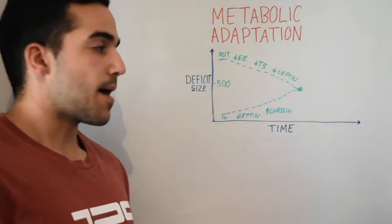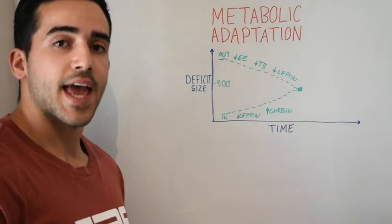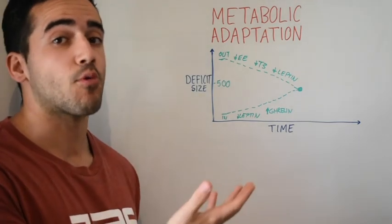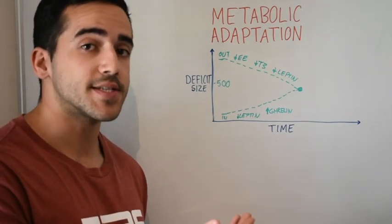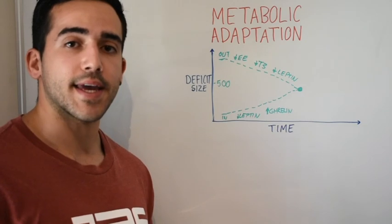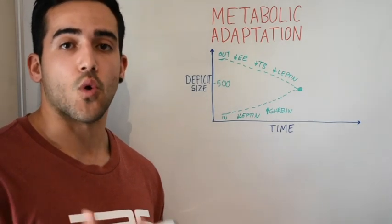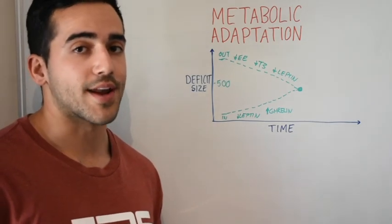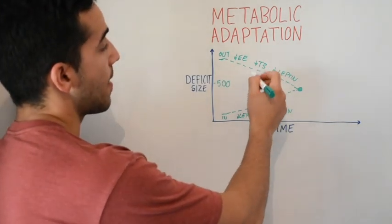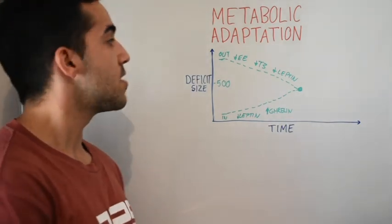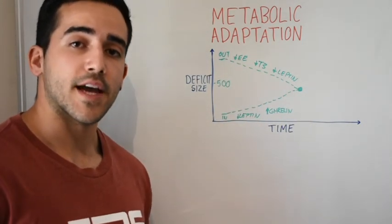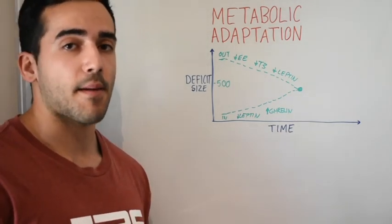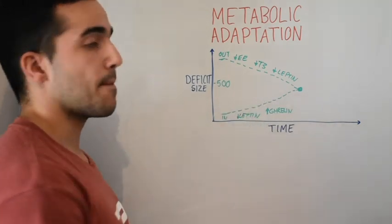So those are some of the main reasons that energy expenditure tends to drop during a dieting phase and our calorie intake is more prone to increasing. There are more hormones that come into play here, like cortisol, which also increases when you are in an energy deficit. Cortisol, when chronically elevated, has a potential to impact T3, even energy expenditure, things like that. So it is important to understand that there are other hormones and mechanisms that come into play, but these are some of the major ones.